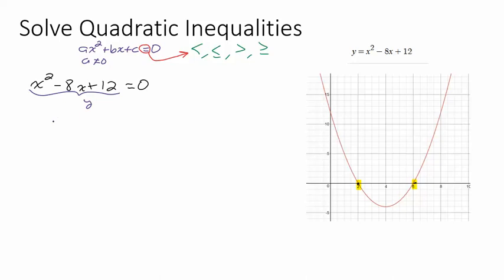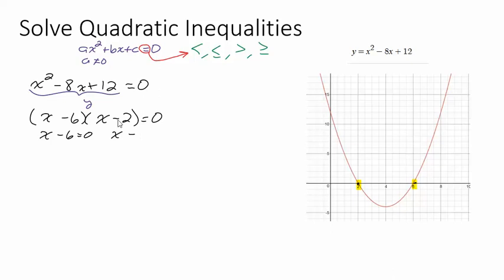Let's remember how we solve that algebraically. The first thing we want to do is look and see if this factors — and it does factor. If it didn't factor, you'd have to use the quadratic formula to find the values of x that make it zero. Since these two factors multiply together to be zero, that means one of them has to be zero: either x minus 6 equals zero or x minus 2 equals zero, which means x is 6 or x is 2.